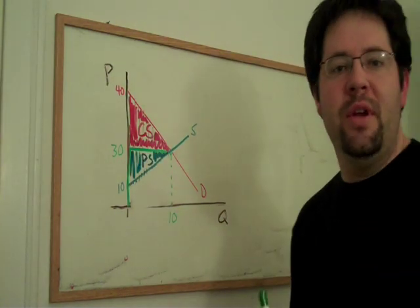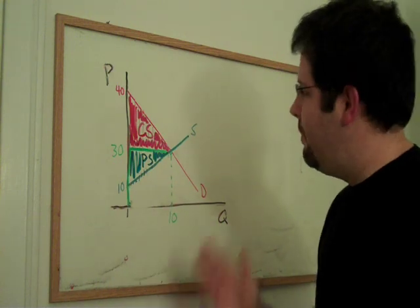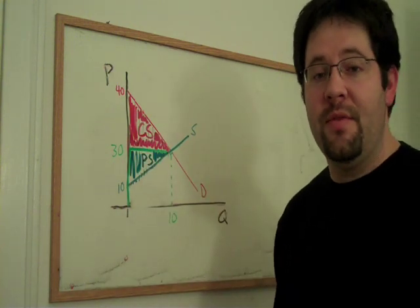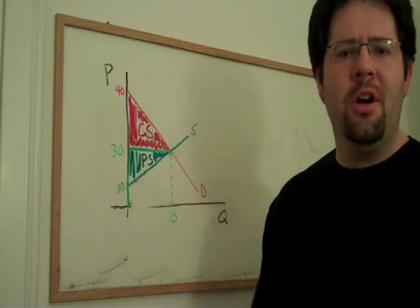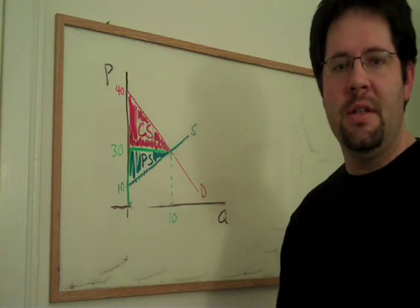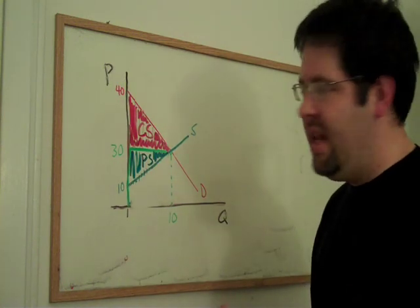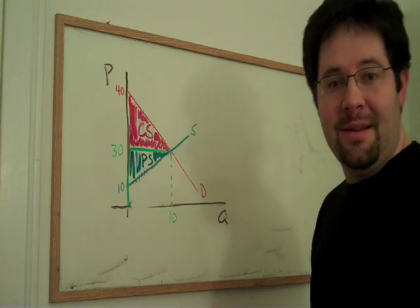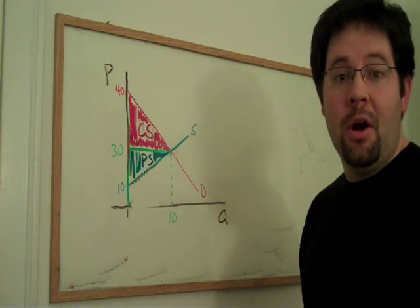So there we have it, a reason to trade. Consumers go to the market because they get consumer surplus from the market. Producers go to the market because they get producer surplus. There's a reason for willing trade. And we can see that this, in some sense, is the value of the market.